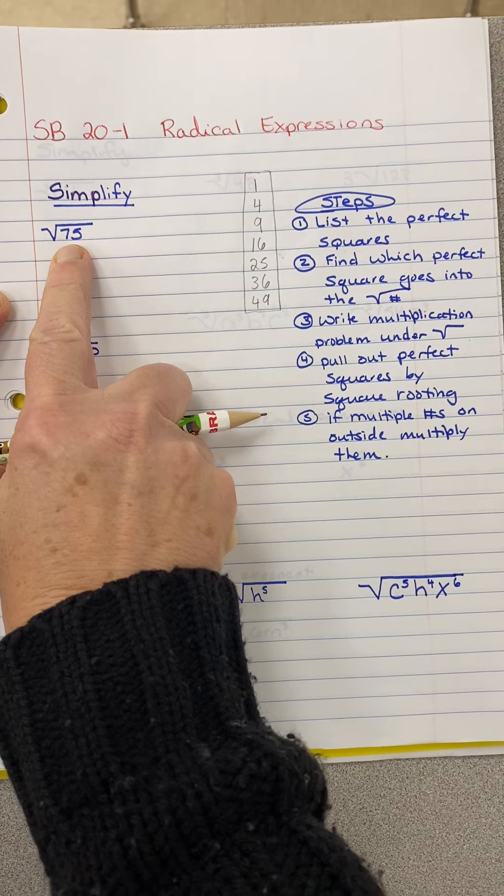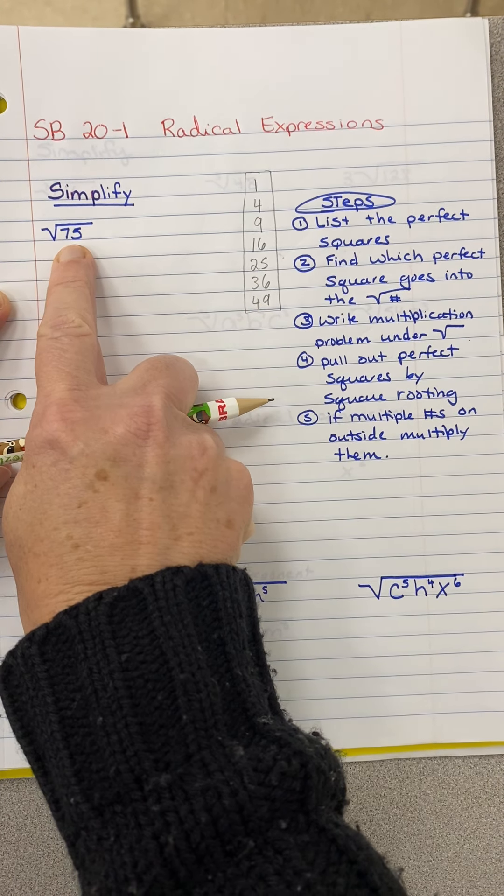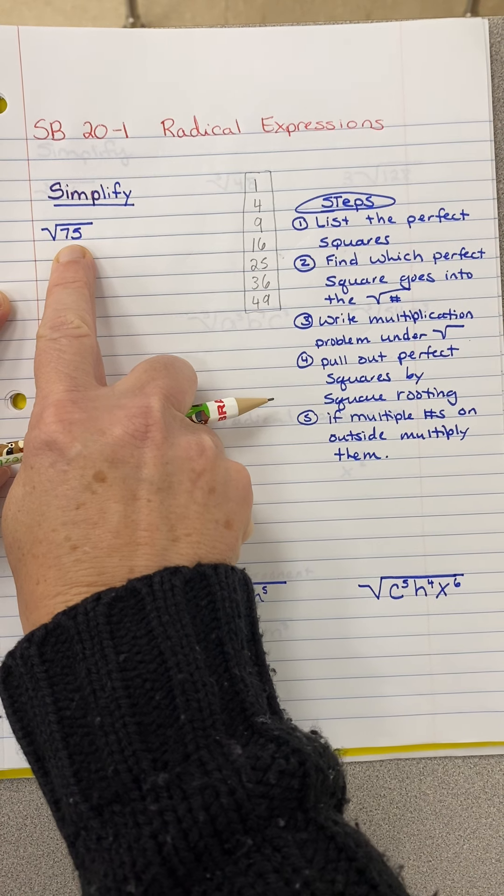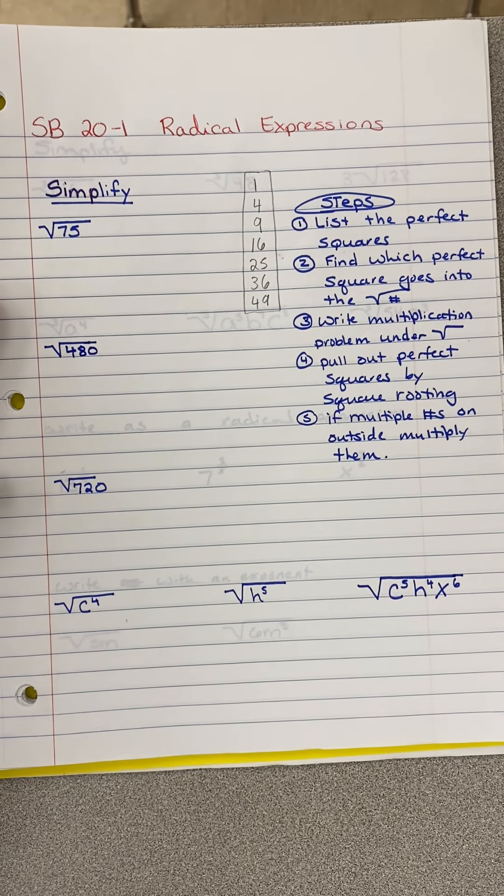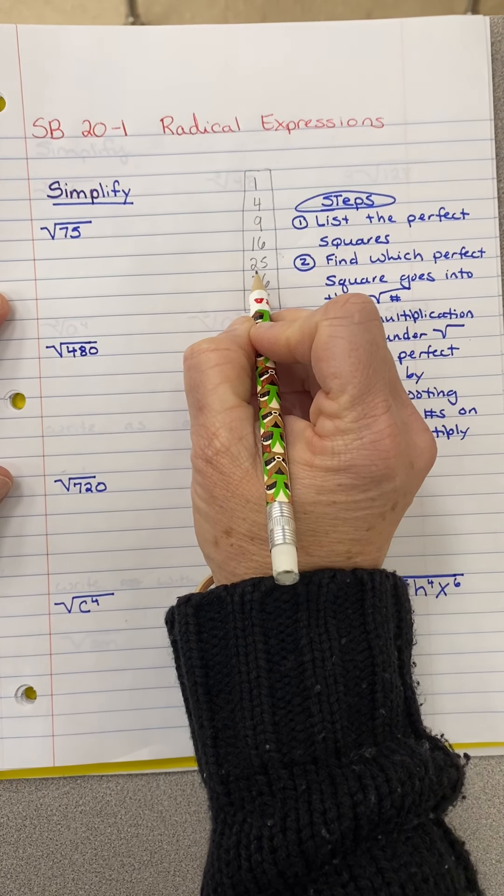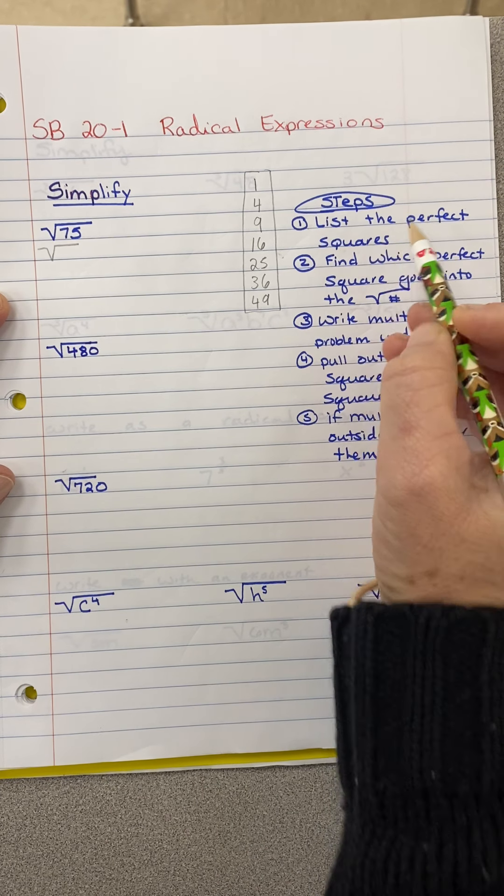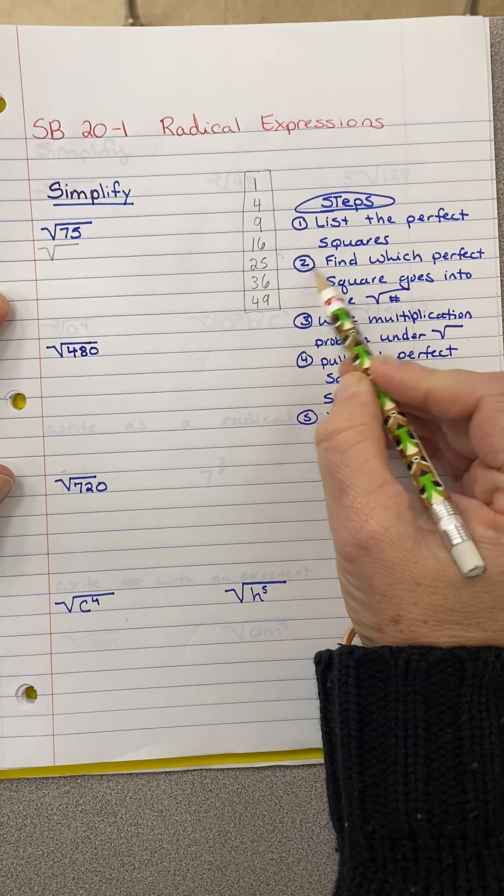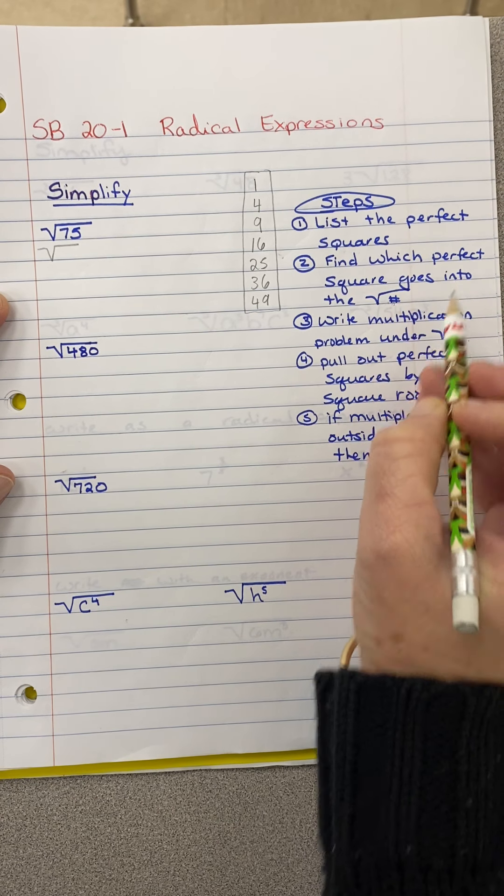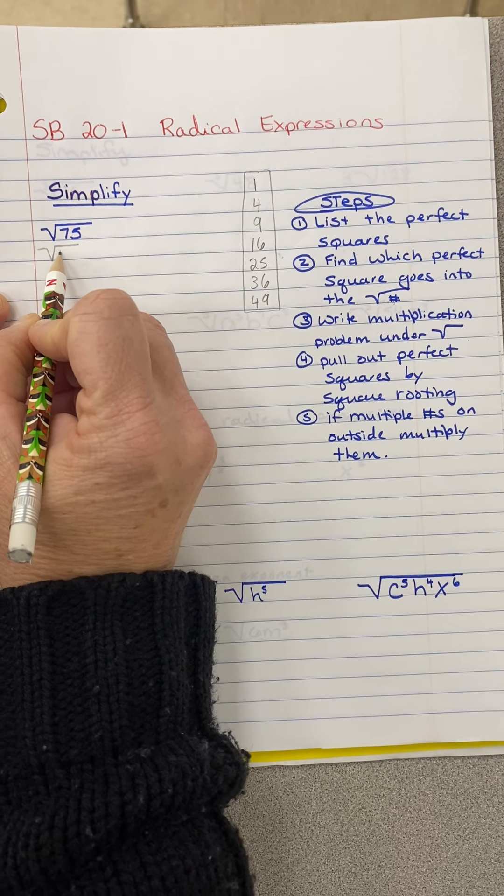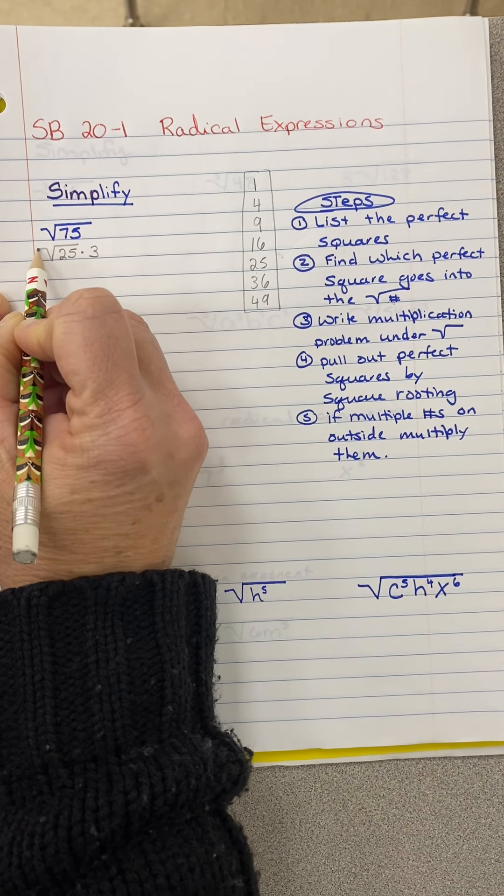And then I look at this number, the square root of 75. Which of these perfect squares goes into 75 evenly? And you can't say five because five is not on this list. It has to be a perfect square. Well, I notice 25. So now I'm on my second step. My first step was to list the perfect squares. My second step is to find which perfect square goes into the number under the radical. 25 times three is 75.